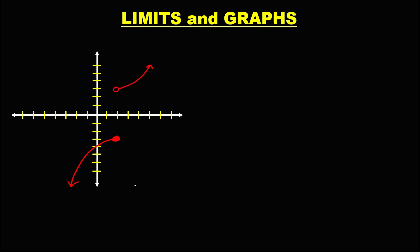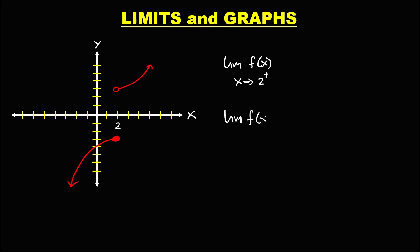Let's have this problem: to evaluate the limits from the graph. First we need to find the right side limit and the left side limit. This is x and y, and this is equal to positive 2. To find the limit of f(x) as x approaches positive 2 from the right, the limit is equal to positive 3.